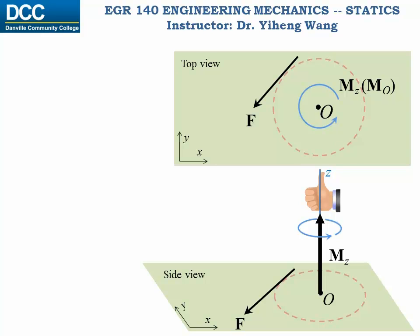Now you know the direction of the moment vector, and also what rotational effect it represents. How about its magnitude? Just like the force, the moment vector can also be quantified, and its magnitude is determined by the magnitude of the force, as well as the perpendicular distance between the axis and the force D, known as the moment arm. So in the scalar form, M equals F times D, and in the vector form, the moment is determined through a vector cross product, that M equals R cross F, with R being the position vector from point O to F.